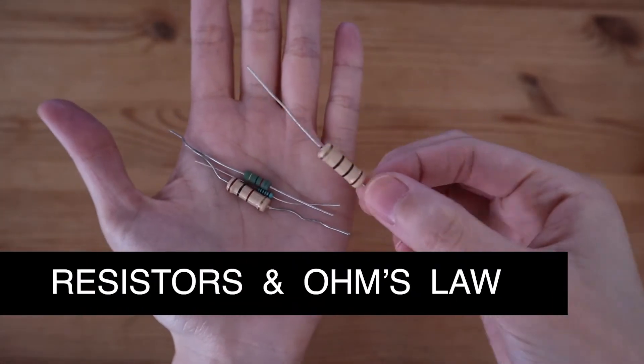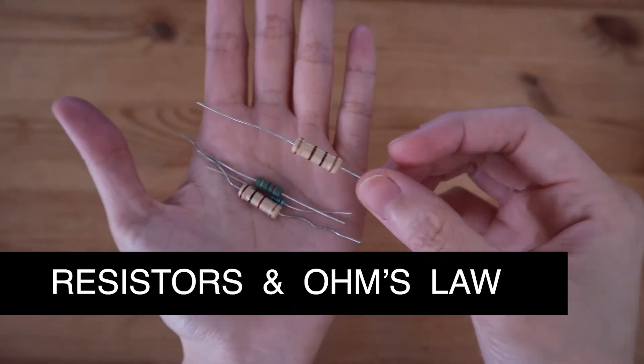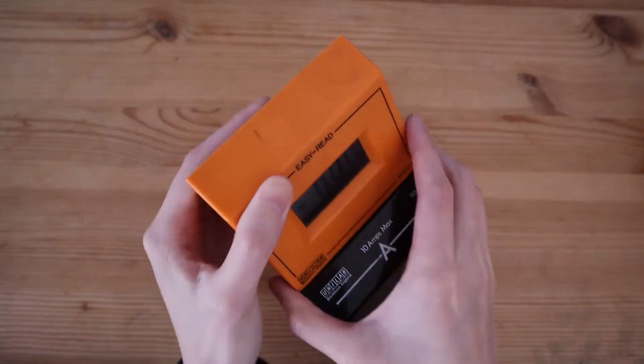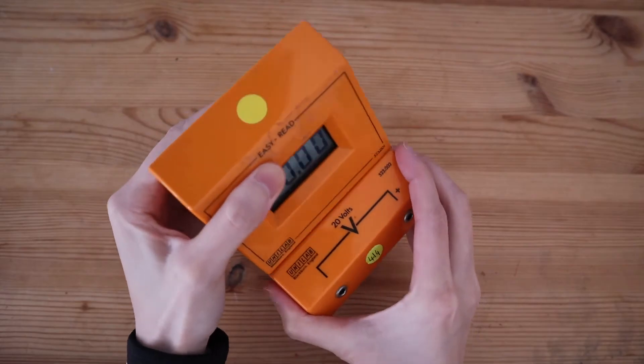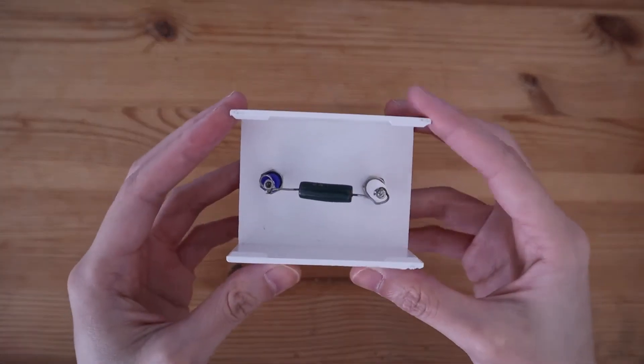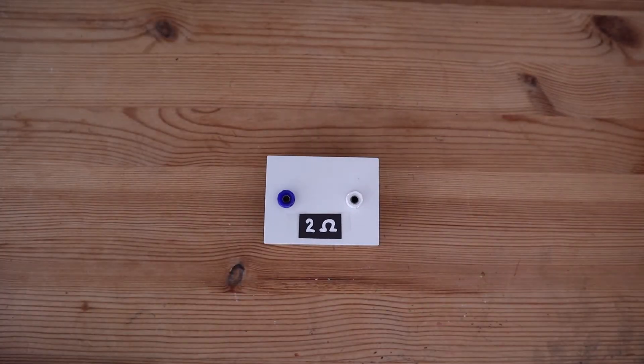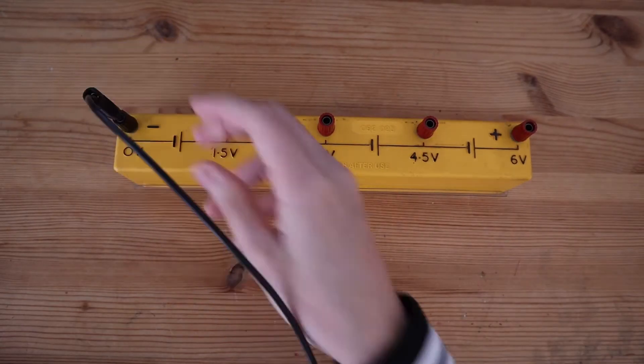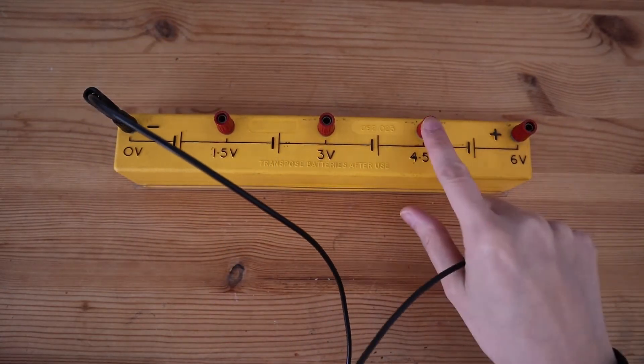This experiment will determine whether a resistor obeys Ohm's law. You will need some leads, an ammeter to measure current, a voltmeter to measure voltage, a resistor (I'm using two ohms), and a battery pack that lets you change the supply voltage by plugging the lead into a different terminal.